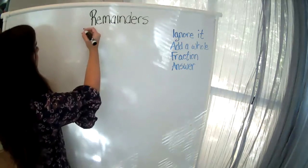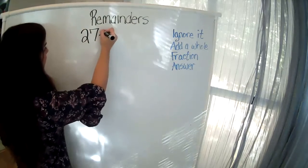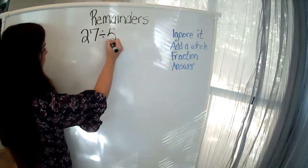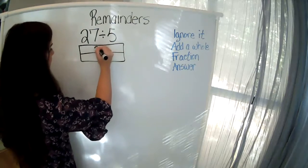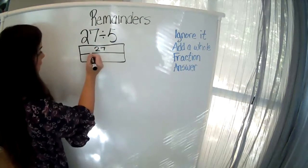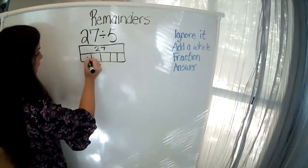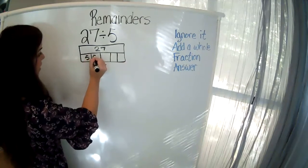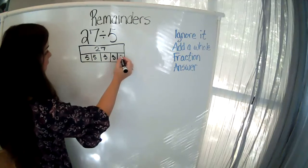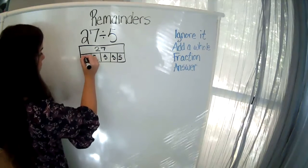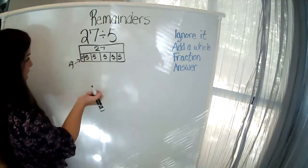Today, we're going to use 27 divided by 5. Now, if I draw a bar model, it will look like this. 27 is my whole, split into 5 groups, and I end up with 5 in each group, plus a little bitty 2 over here. And this 2 is my remainder.